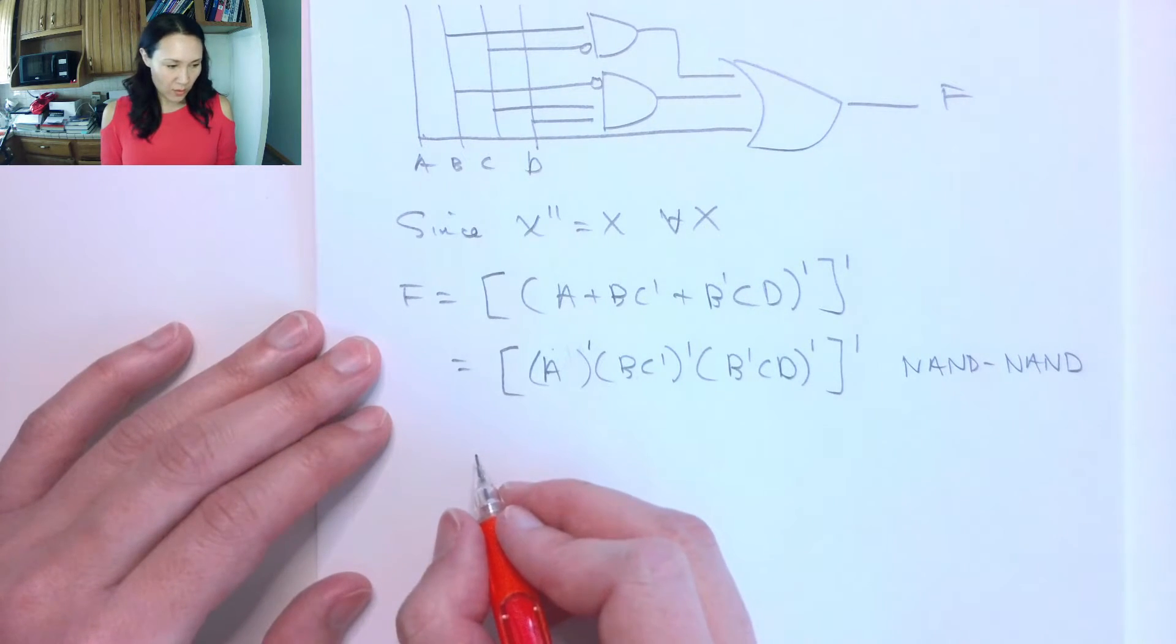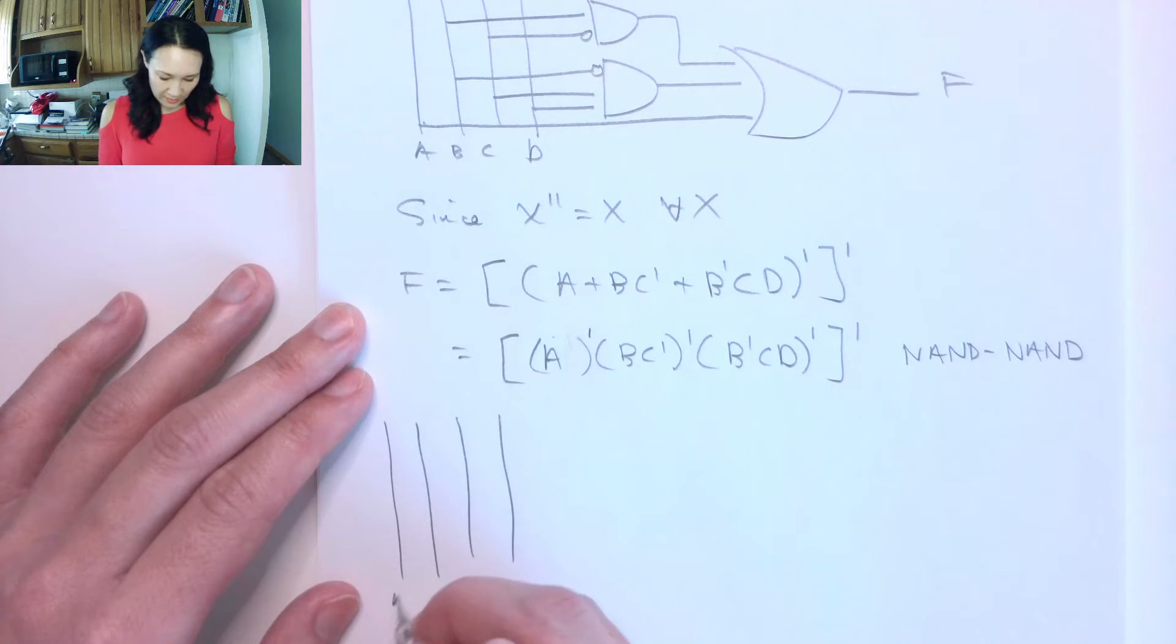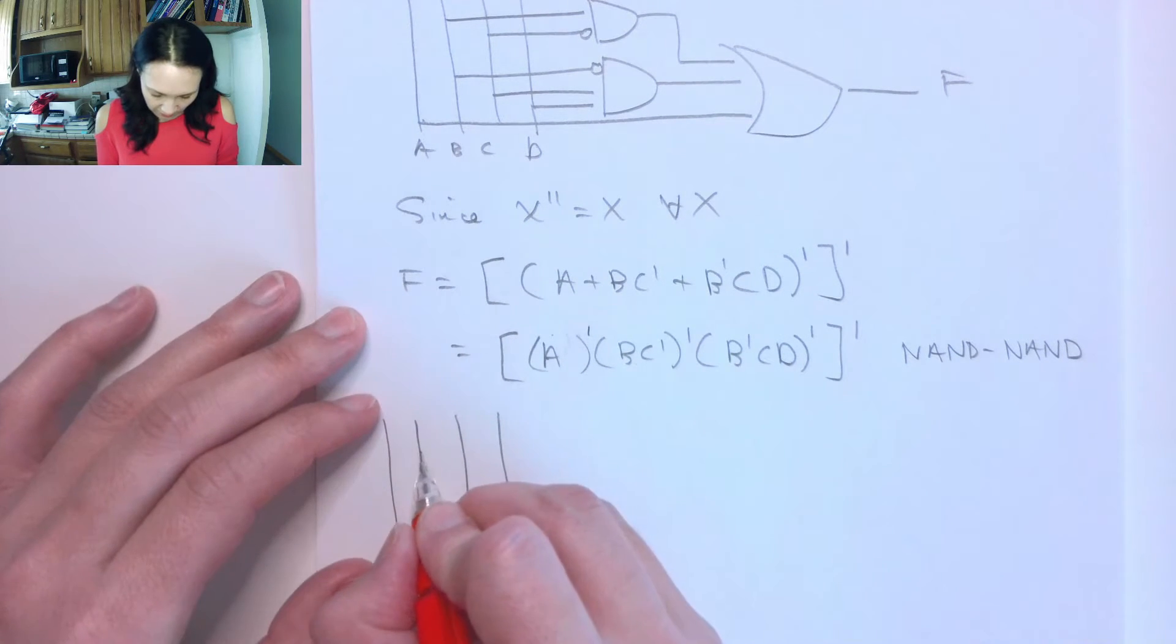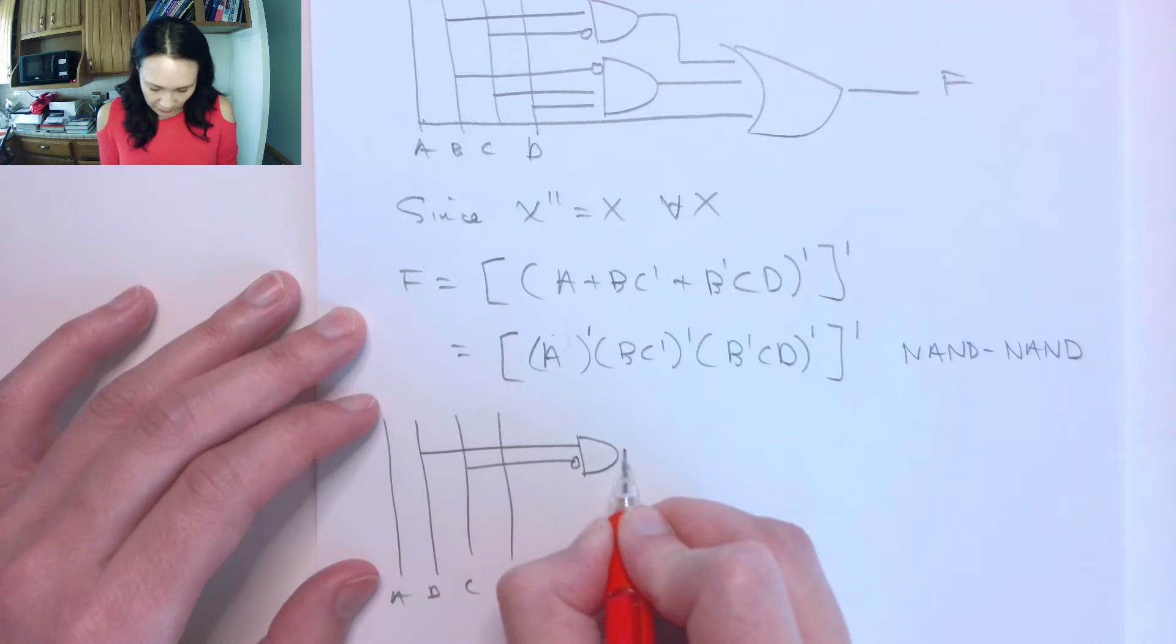And the way the circuit looks is, if I have my inputs again, A, B, C, D, if I were to grab a B, grab a C, and NOT it, and put this into a NAND gate.